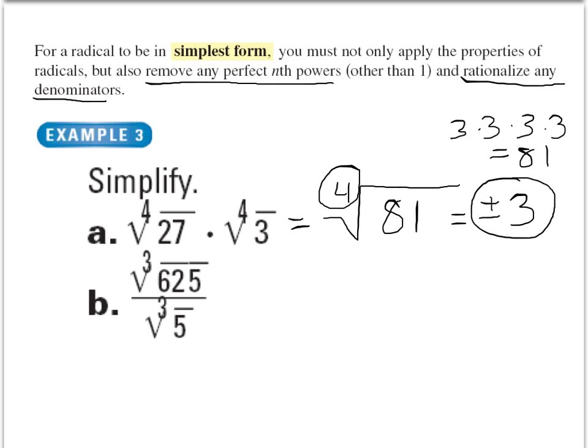For example B, we have to do a little more removing of perfect nth powers. We have this cube root of 625. But if we take the factors of 625, we know that 5 times 125 is going to give us 625. And that's perfect because we already know the perfect cube root of 125 is 5.